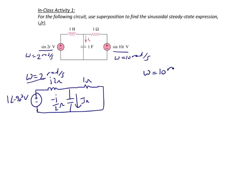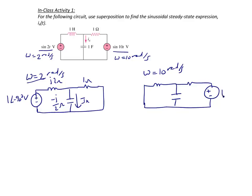For the right circuit with omega equals 10 radians per second, we short out the left voltage source. We have the inductor, capacitor, and resistor again. The right voltage source is 1 at an angle of negative 90 degrees volts. The resistor is 1 ohm, the inductor is J10 ohms, the capacitor is negative J/10 ohms, and the current through it is Ix double prime.